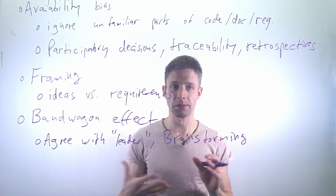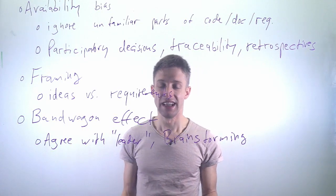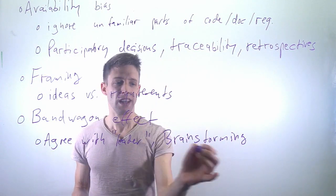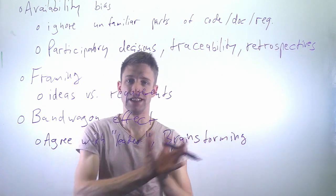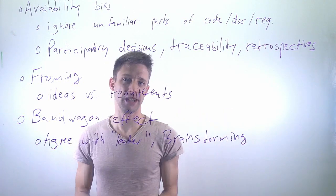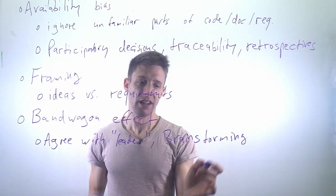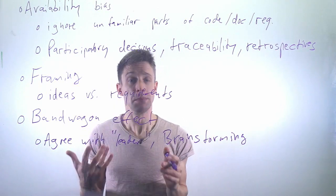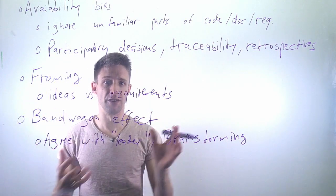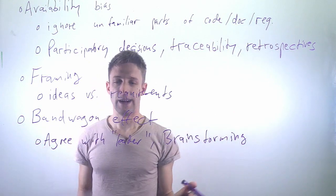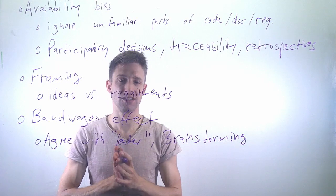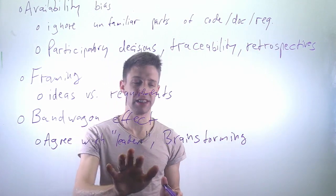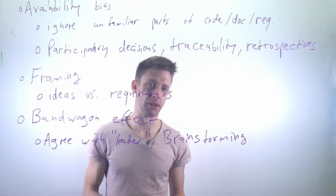So suddenly your brainstorming, which is supposed to be a really creative exercise, is not that creative at all, because the person or the first couple of opinions that are voiced basically direct the brainstorming in a certain way. So that can be very problematic if you actually want to be creative, if you want to have very diverging ideas. And in the end it's the same thing - a couple of people kind of lead the group in a certain direction and the others tend to align with that.